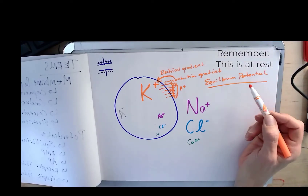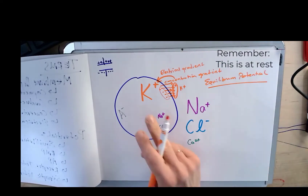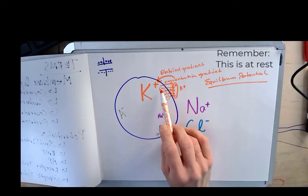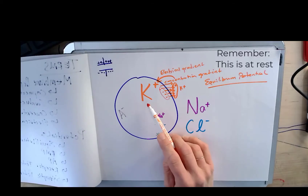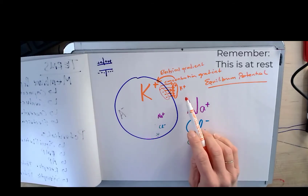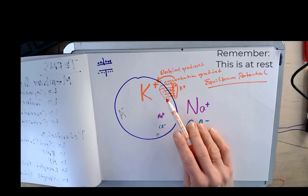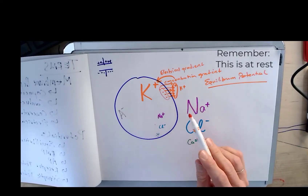The equilibrium potential is read on the inside by convention. You can always figure out the equilibrium potential by asking: what is the charge on the inside of the membrane that's going to balance the force of the concentration gradient? If you had neutral molecules, equilibrium would be 50-50, but because potassium carries charge, the equilibrium potential is the charge on the inside of the membrane that opposes the concentration gradient.